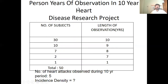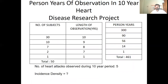For person-years of observation, consider a 10-year heart disease research project: 30 people observed for 10 years, 10 people for 9 years, 7 for 8 years, 2 for 7 years, and 1 for 1 year. Five heart attacks were observed over 10 years. To calculate incidence density: 30×10=300, 10×9=90, 7×8=56, 2×7=14, and 1×1=1. Sum all person-years and put new cases in the numerator.